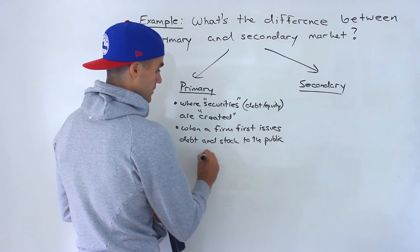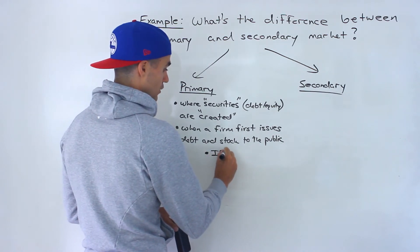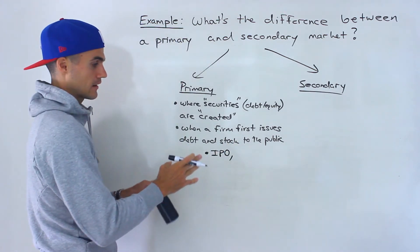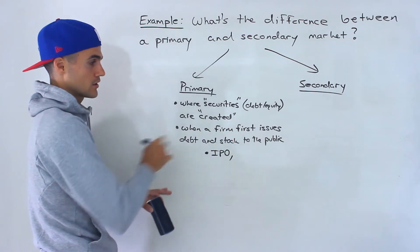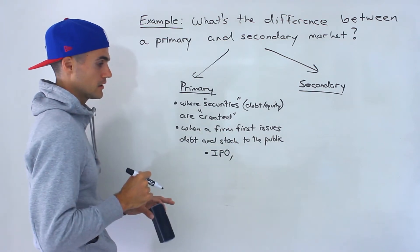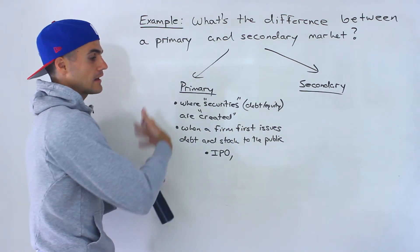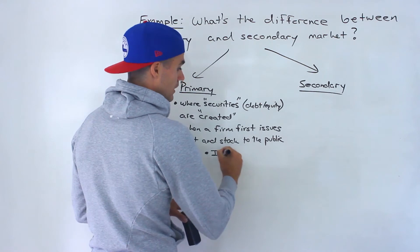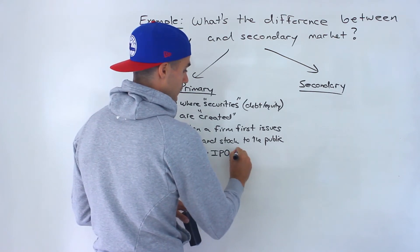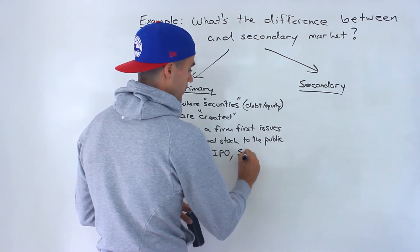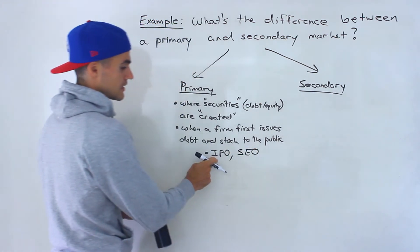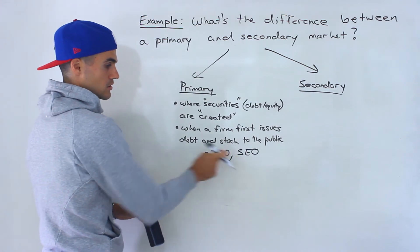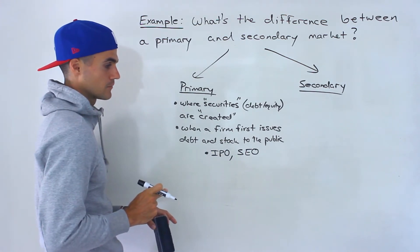Usually it's through an IPO — that's the very first time that a company issues securities to the public. But then they could issue more securities in the future, and that's called a seasoned equity offering, an SEO. This is an initial public offering; this is called a seasoned equity offering.